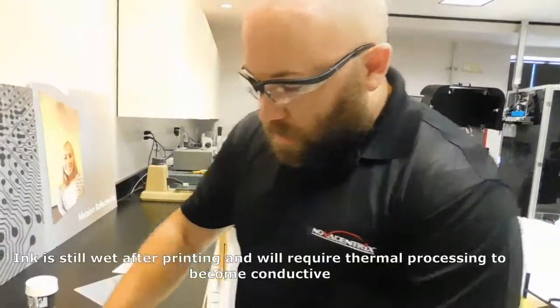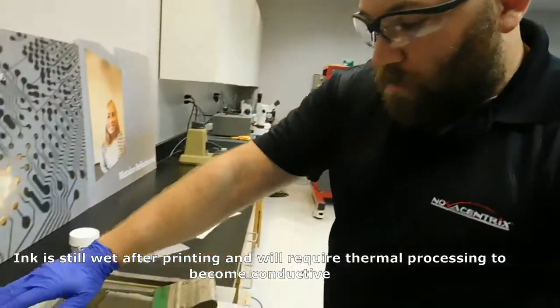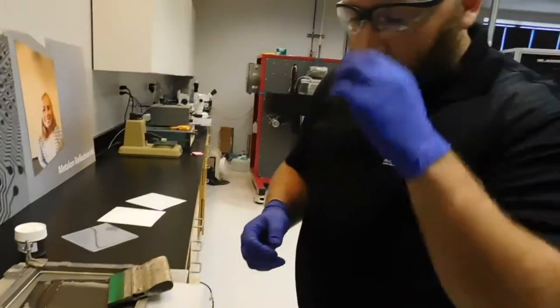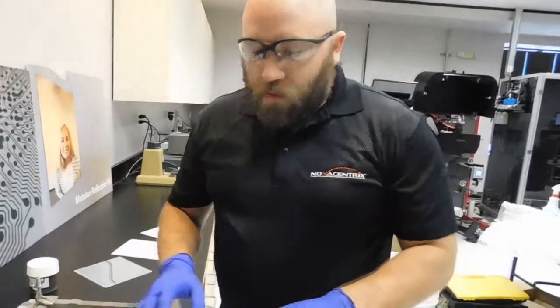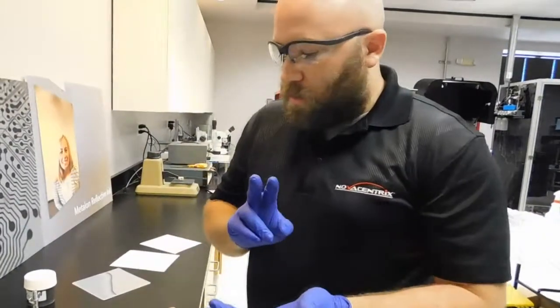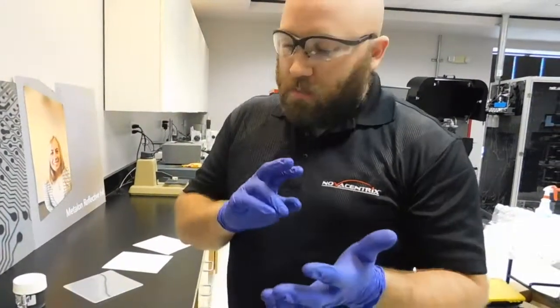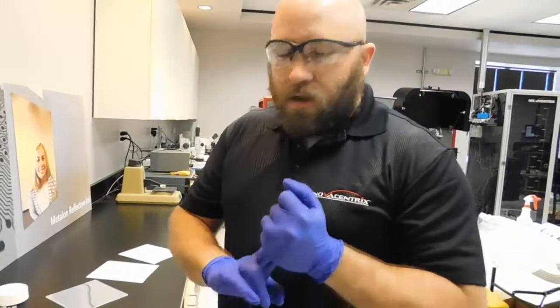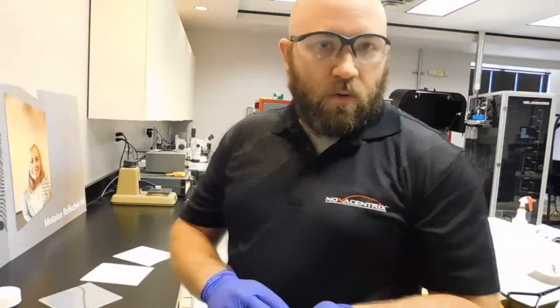So right now it's wet. You can't really stack them on top of each other. You got to leave them separated. But what's going to happen is it's going to begin to kind of dry in room condition. So from this point, we're going to think about how we're going to cure it. And so the next part of the video, we're going to catch up. We're going to show you how to cure it if you just have an oven, and we're going to do a little section on curing it if you want to use the Pulse Forge.